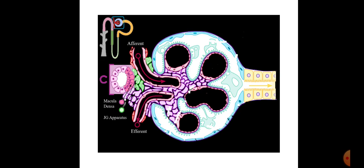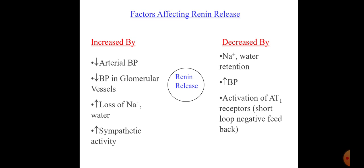From physiology, we know that renin is secreted from the juxtaglomerular cell. The factors affecting renin release are important. When there is increased blood pressure, the body tries to decrease renin release. Conversely, when there is decreased fluid volume or decreased blood pressure, the body tries to increase renin release. Renin is increased by decreased arterial blood pressure, decreased pressure in the glomerular vessel, increased loss of sodium and water, and increased sympathetic activity.